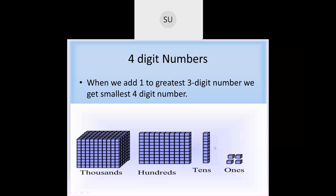So 4-digit numbers — what are 4-digit numbers? When you add 1 to the greatest 3-digit number we get the smallest 4-digit number. The greatest 3-digit number is 999. So when I add 1 to 999, I get the smallest 4-digit number which is 1000. Here are blocks that represent a 4-digit number.